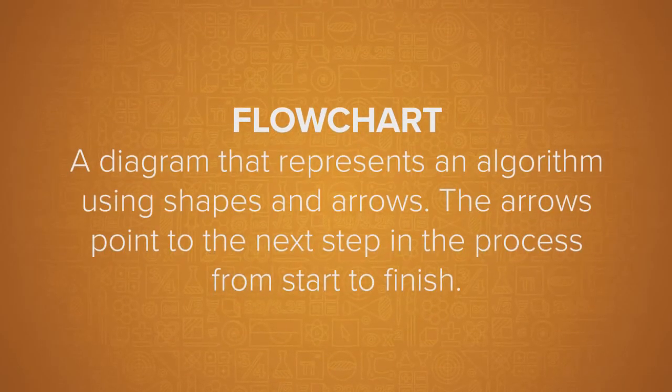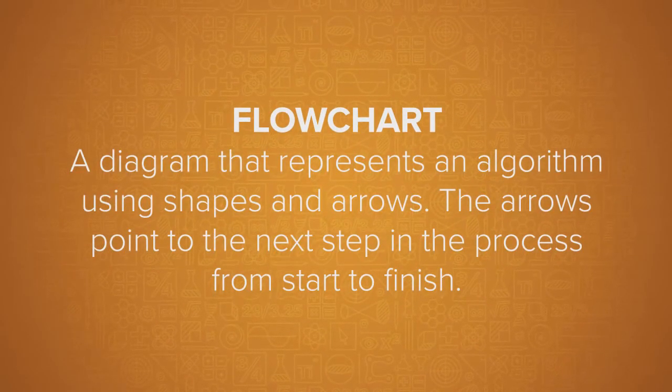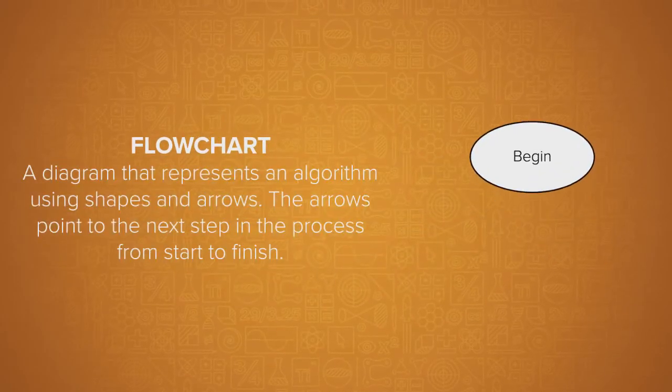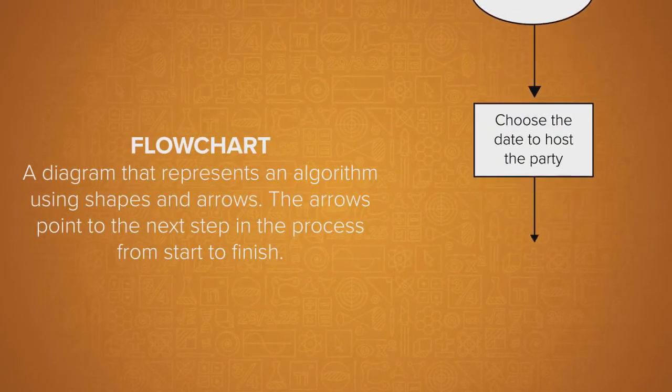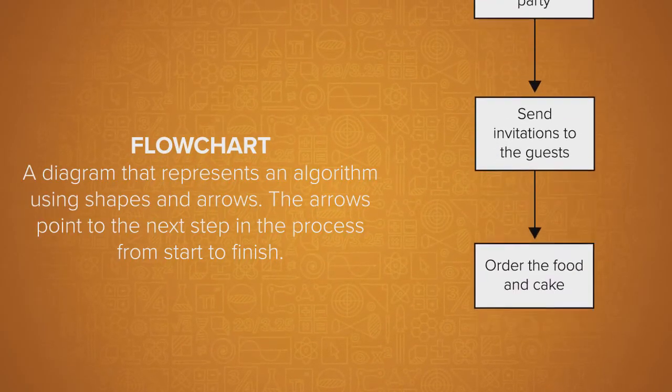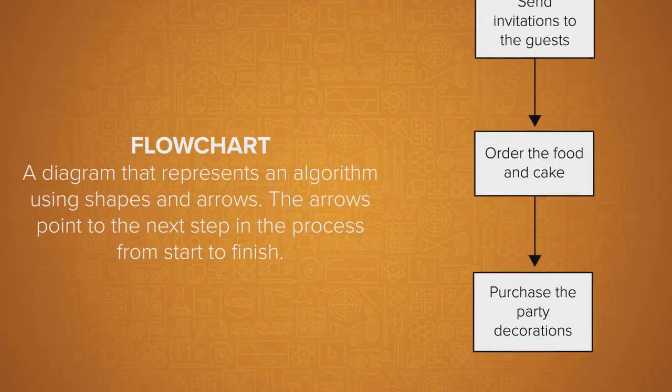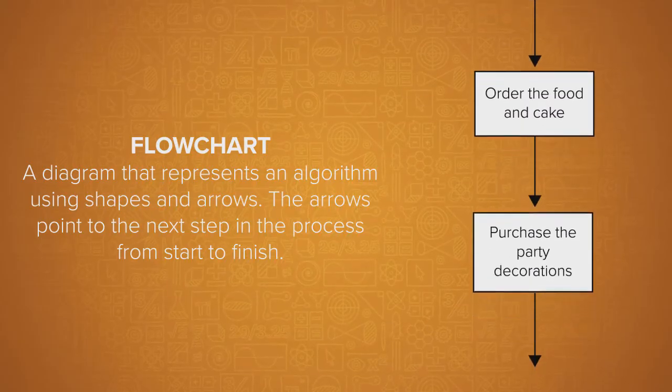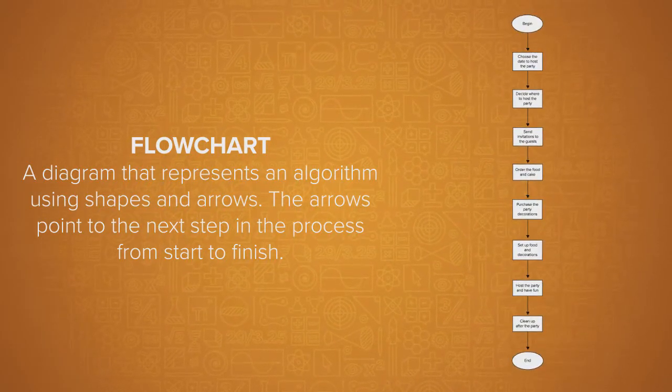Another way is using a flow chart. A flow chart is a diagram that represents an algorithm using shapes and arrows. The arrows point to the next step in the process from start to finish. The flow chart is a great visual to understand linear algorithms. Notice that the sequence of steps for the party flow in a straight line. It's a linear flow.